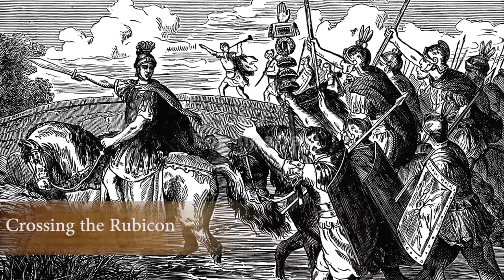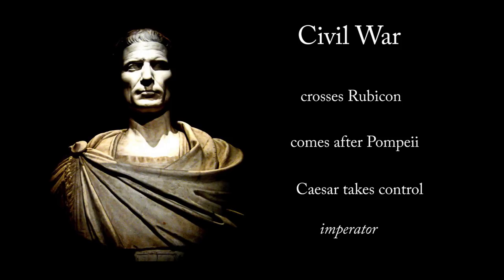Crossing the Rubicon is — we use it euphemistically now to mean that you've crossed a line, you've gone too far, the point of no return has been crossed. And that really is what it was for Caesar as well. As a general, to bring his armies down and cross the Rubicon was illegal — it was an act of hostility, of war. Caesar knew what he was doing, and so he came after Pompey. And eventually, after a series of events, he wins.